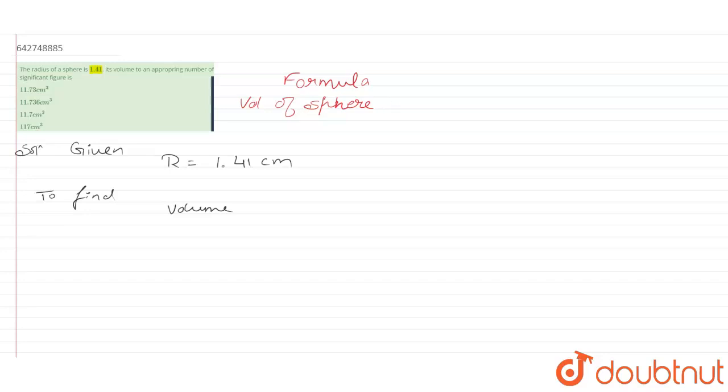V denotes volume of sphere, which is equal to 4/3 π r³. Keeping this in mind, we will continue ahead with our solution.